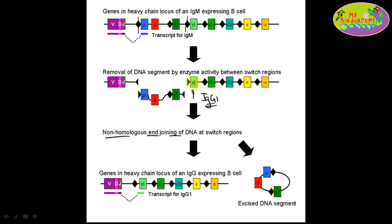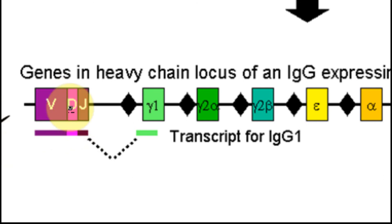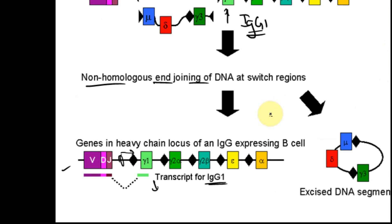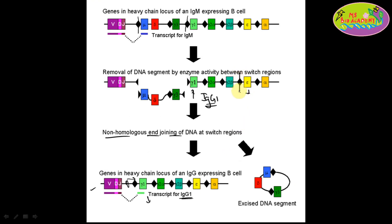The switched regions join together by non-homologous end joining (NHEJ). Finally, VDJ is joined to the switch and then gamma one, so when the transcription factor binds to the promoter region, it synthesizes RNA for IgG1, and after translation, IgG1 antibody is produced. If IgE needs to be produced, breaks occur at the corresponding switch regions, the middle portion is deleted, the two portions join together, and IgE antibody is produced.